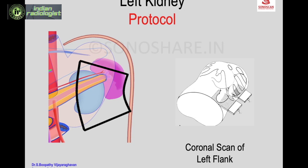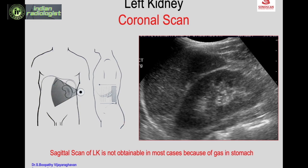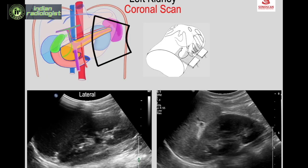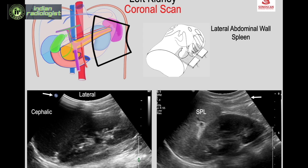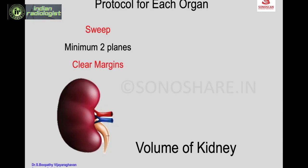Regarding the left kidney: the protocol is a coronal scan from the left flank, as shown in the schematic. The sagittal scan of the left kidney is not obtainable in most situations because gas in the stomach prevents visualization from the anterior aspect. The relationship is lateral-medial and upper-caudal, and the image is similar to the coronal scan of the right kidney, but with different structures: spleen instead of right liver lobe, left kidney, left psoas, and the left lateral surface of the vertebra casting a shadow.